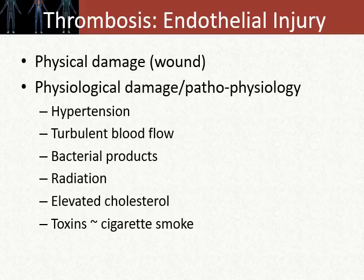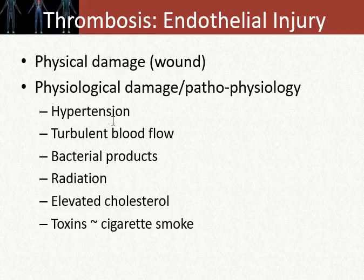The way thromboses or clots can form could be physical damage such as a wound. For this lecture, we're going to talk about physiological damage or pathophysiology that results in the formation of clots because of hypertension — uncontrolled hypertension — and turbulent blood flow, which is happening within the atria. Those atria are not contracting at the proper speed and in many cases are asynchronous. You get this pooling or regurgitation of blood within the atria, which can form a hypercoagulated state. Other things such as bacterial products, cholesterol, toxins, and radiation can also induce the formation of clots.